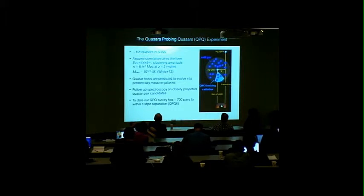Thanks to Sloan, we have a catalog of a million quasars. If we assume the two-point correlation function takes a power-law form, here R0 is the clustering amplitude. Quasars at redshift 2 have a clustering amplitude of around 8 megaparsecs. And White et al. 2011 computed that this clustering strength implies a dark matter halo mass of 10 to the 12.5 solar masses. These quasar host galaxies are predicted to evolve into present-day massive galaxies.